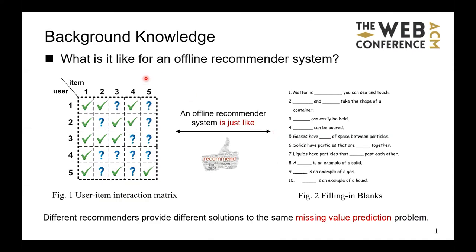First, I'd like to introduce some background knowledge. What is an offline recommender system? From a data perspective, it mainly deals with the user-item interaction matrix, where each element shows whether the user has interacted with the item or the user's rating toward it. The goal of a recommender system is to predict the missing values of this matrix, so that new relevant items can be properly recommended to the user. The recommendation task is just like filling blanks, and different recommender systems are just different solutions to the same missing value prediction problem.